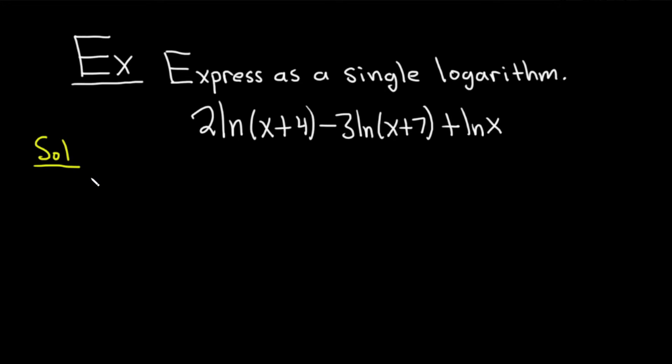So the first property we're going to use says if you have a number times the natural log of x, this is equal to the natural log of x^p. So if you have p·ln(x), it's equal to ln(x^p). That's called the power rule for logs.